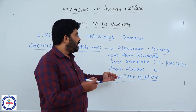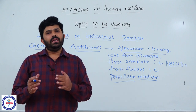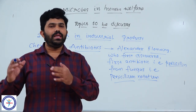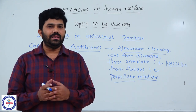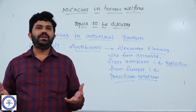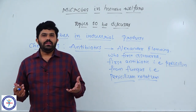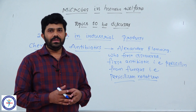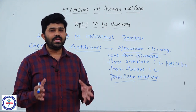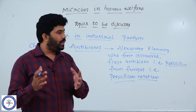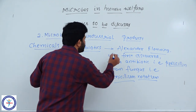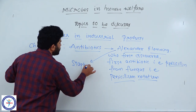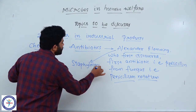Behind the discovery of penicillin, there is a small story. Every day, Alexander Fleming was doing research work in his lab. There were many petri dishes — some cleaned, some not cleaned. On the unwashed petri dishes, he was conducting experiments on a bacterium called Staphylococcus. But on one of the plates, he did not observe the growth of Staphylococcus bacteria.